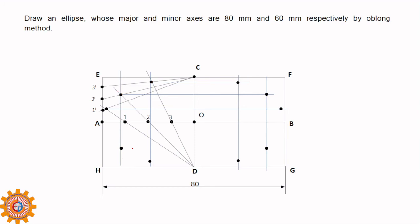You have to draw a smooth curve joining these black spots are called points. This is how we have derived or drawn this ellipse.